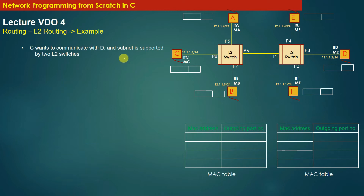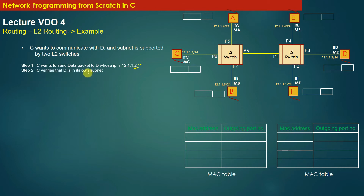C wants to communicate with D, and the subnet is supported by two L2 switches. C wants to send a data packet to machine D whose IP address is 12.1.1.2 — this is user input. C verifies that D is in its own subnet by applying the mask value /24 on D's IP address, which gives the same network ID as C's interface. If this condition is true, C concludes that 12.1.1.2 is present in the same subnet.